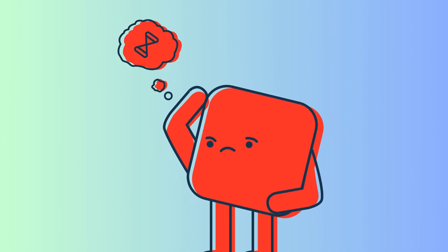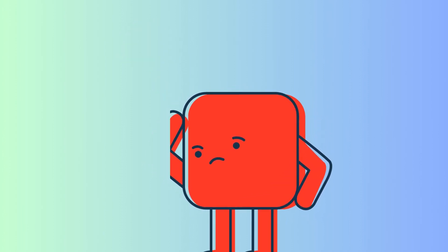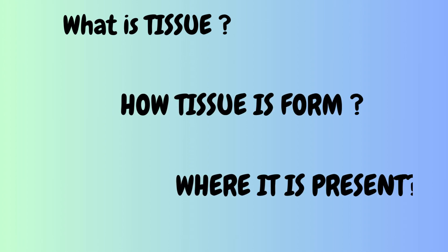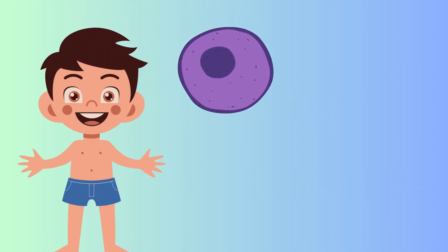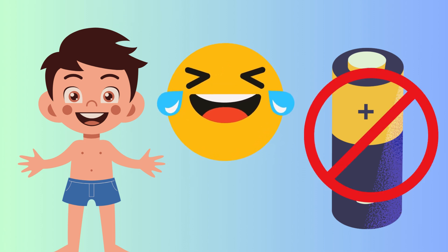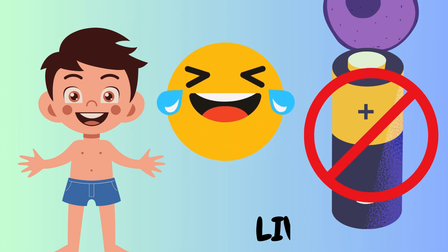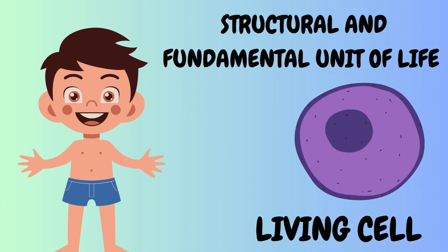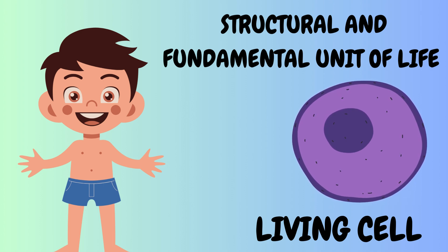The very first thing that we have to understand is what tissue is, how it is formed and where it is present. Let's understand it with an example. As we know, living things are formed of cells. Here I am not talking about the cells that we use in remote controls or any other appliances. Here I mean a living cell, which is the basic, fundamental structural unit of all living organisms.